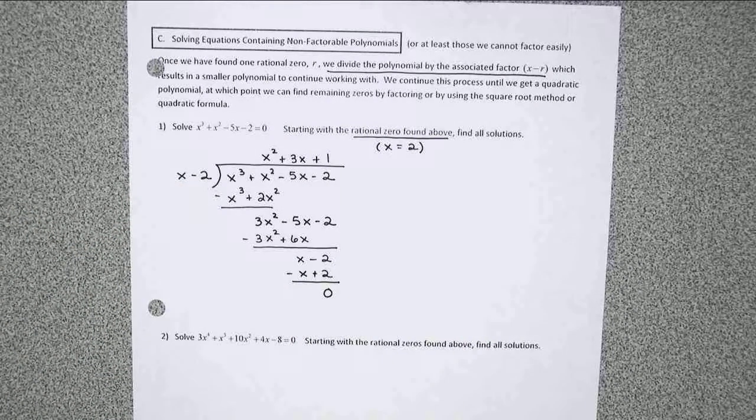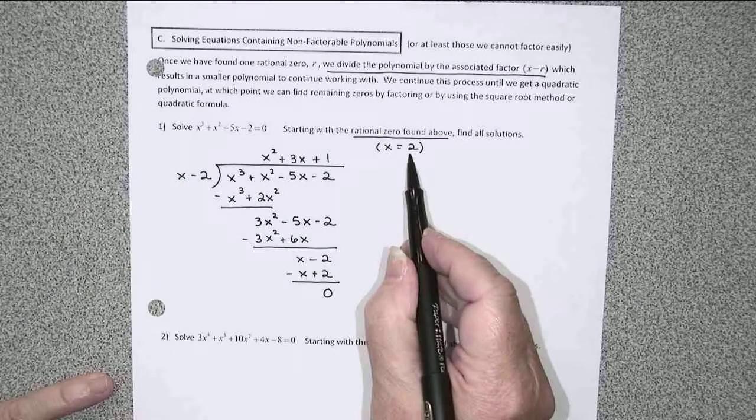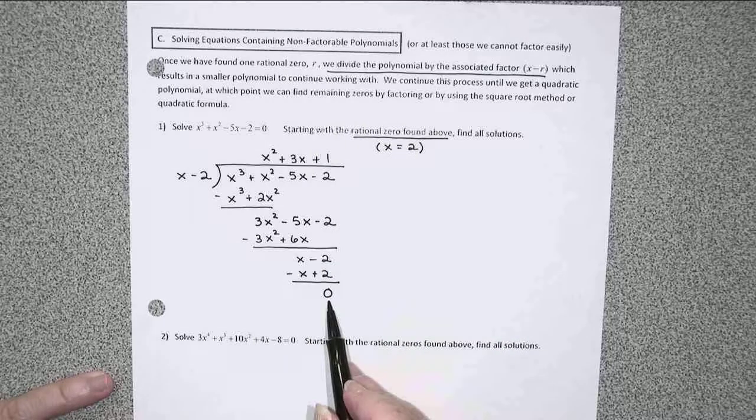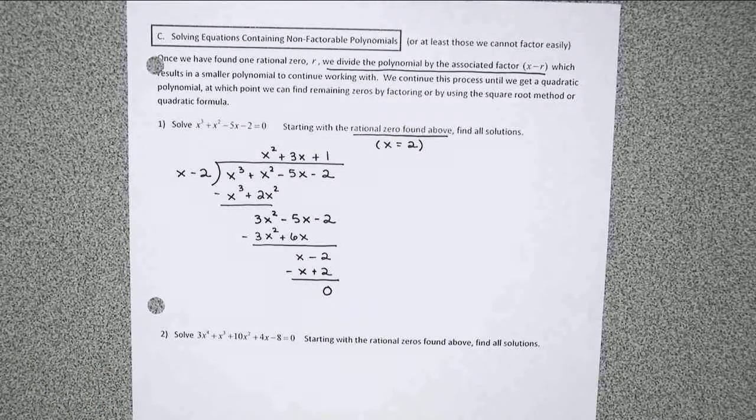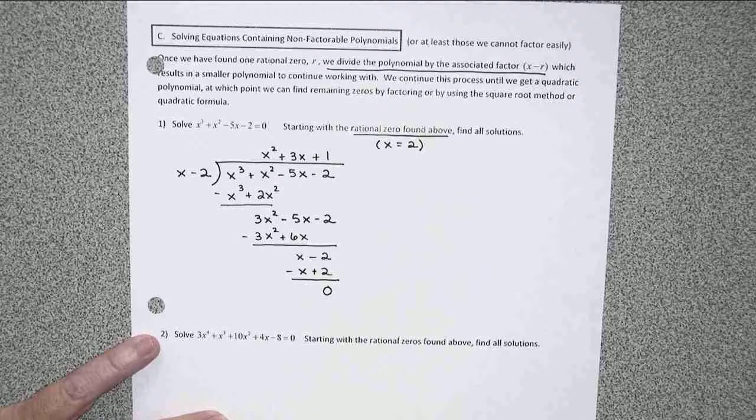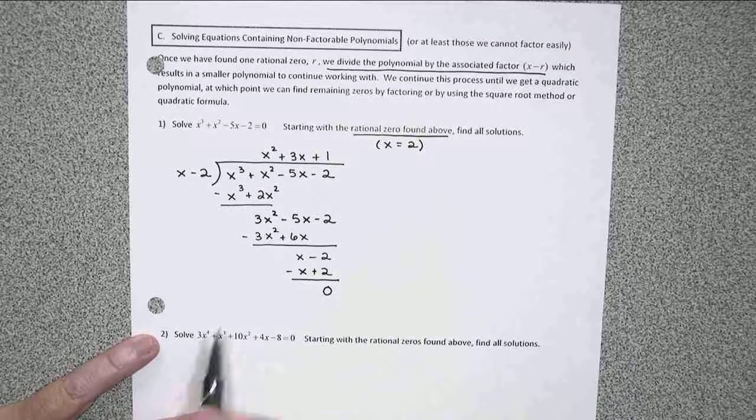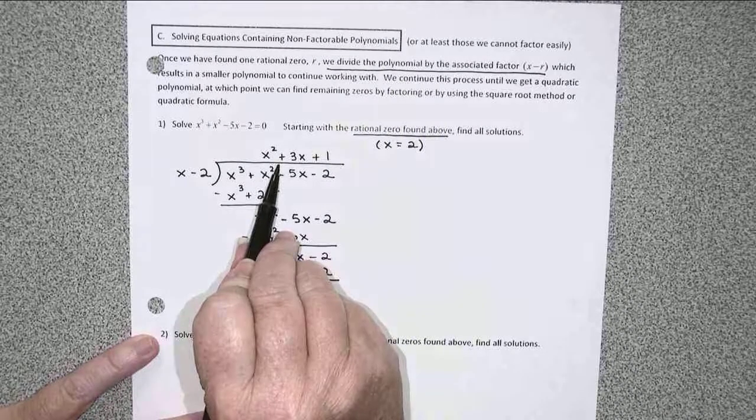If we found a true rational zero, it should come out evenly with no remainder every time. Otherwise, we've done something wrong. So I now have this smaller degree polynomial.